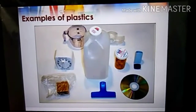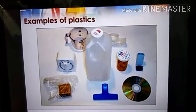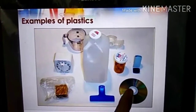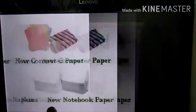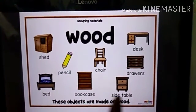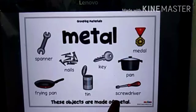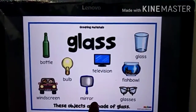So these are all the different types of materials. Once again: plastic, paper, wood, fabric, metal, and glass.